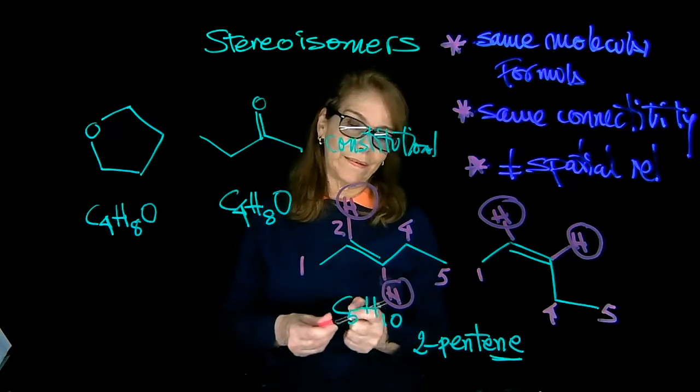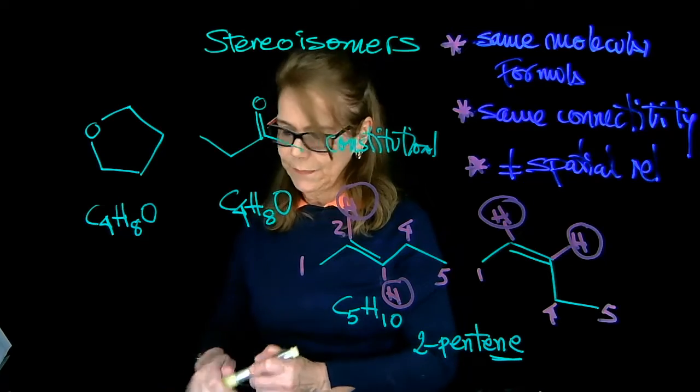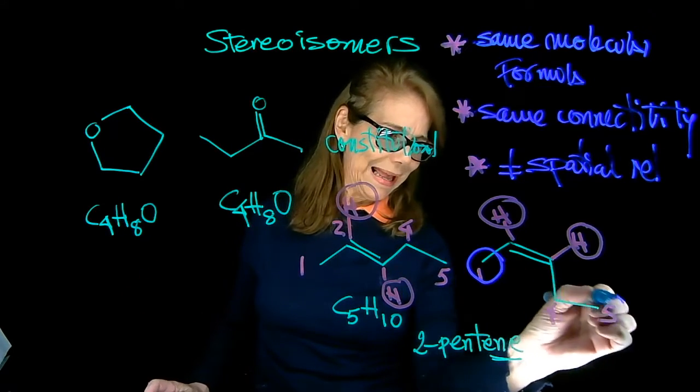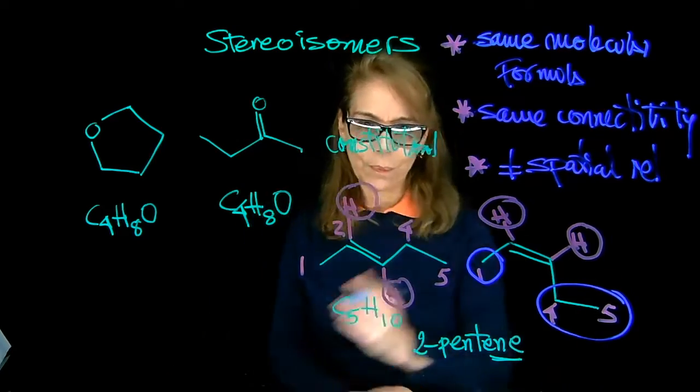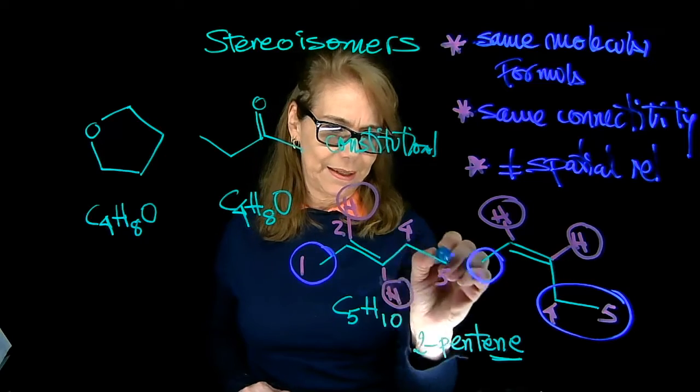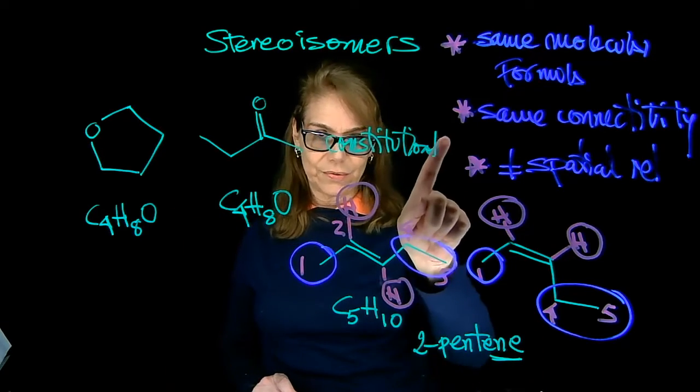Or you can also say that here, comparing the chains, we have in this molecule, we have a methyl group and an ethyl group pointing to the same side. And here, the methyl and the ethyl are opposite sides of the double bond.